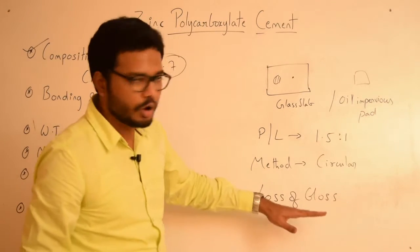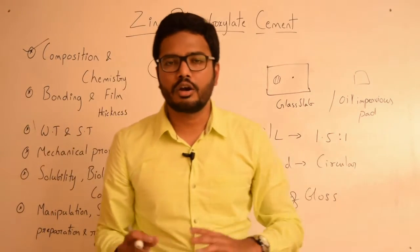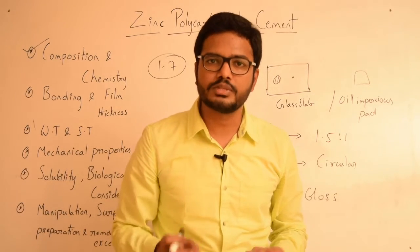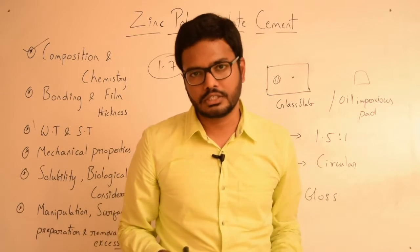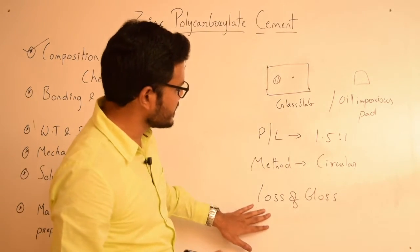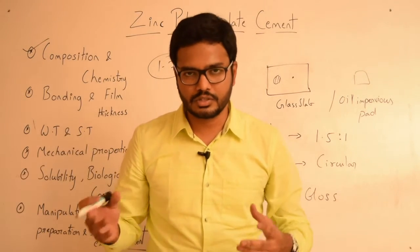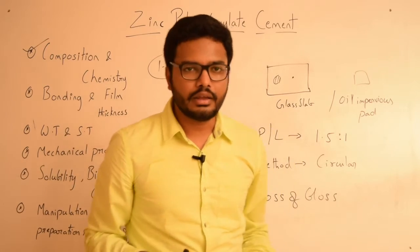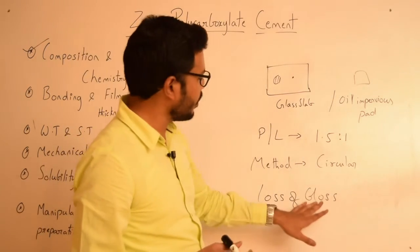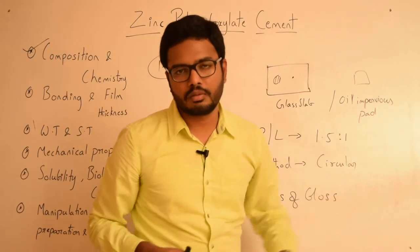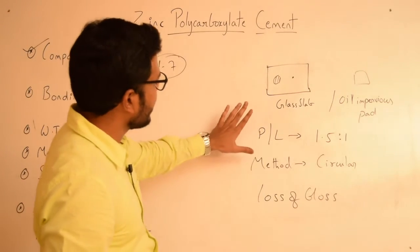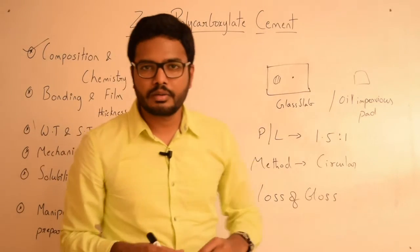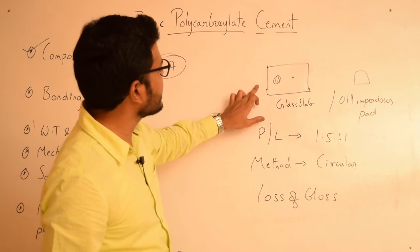When the cement loses glossiness, it indicates that there are no free carboxylic groups available. A glossy cement means free carboxylic acid groups are still available for bonding to dentine, enamel, or tooth structure. Once the cement loses its gloss, the free carboxylic groups have been consumed during setting, and the cement must be discarded and re-manipulated. Loss of gloss is therefore an important indicator for the presence of free carboxylic acid chains.